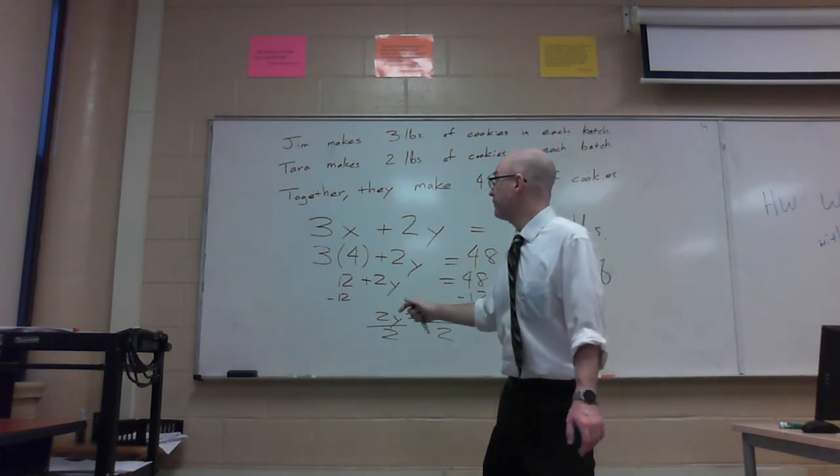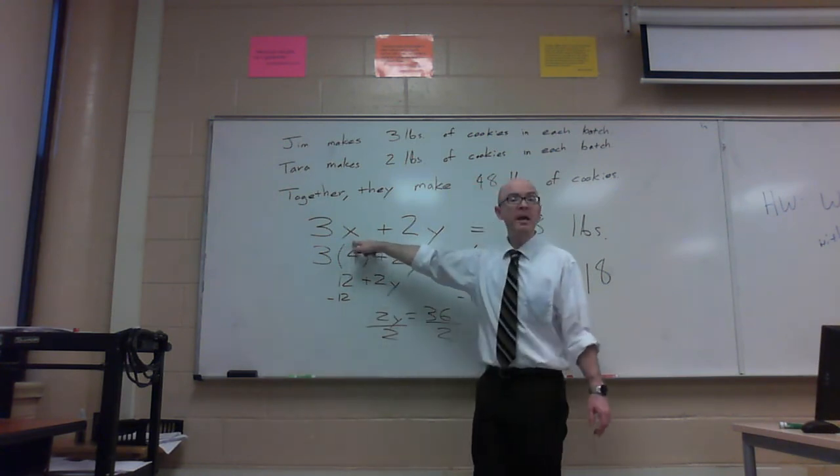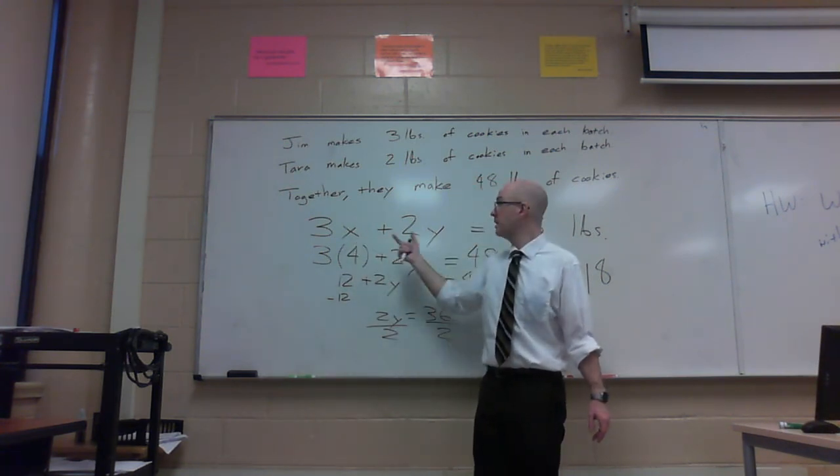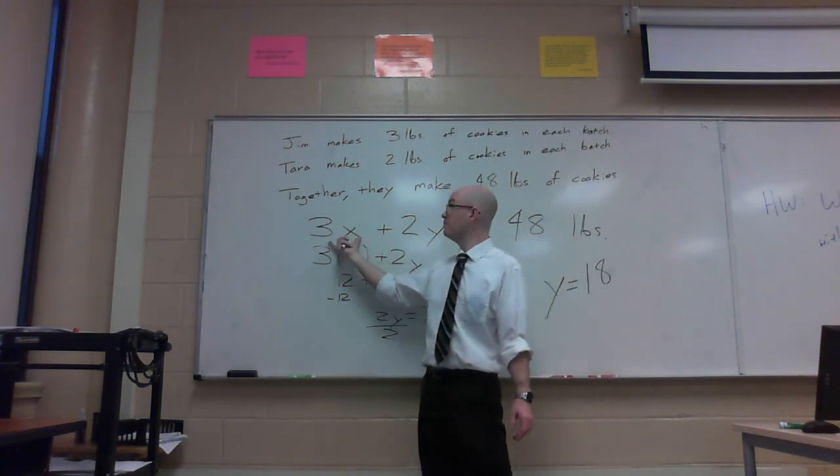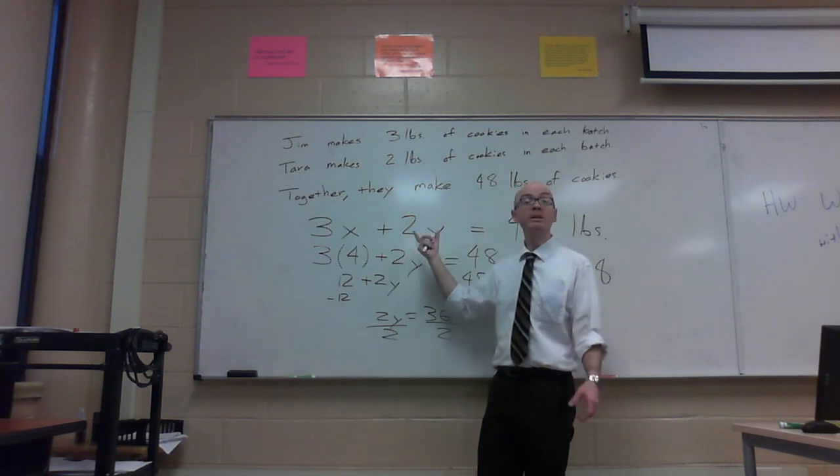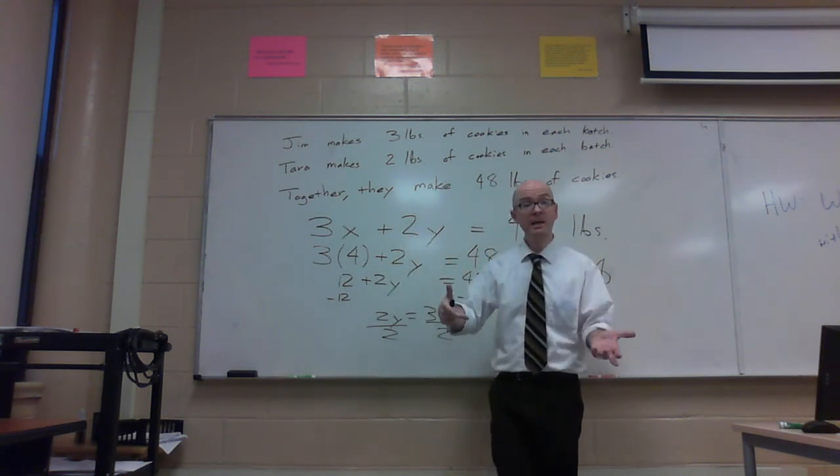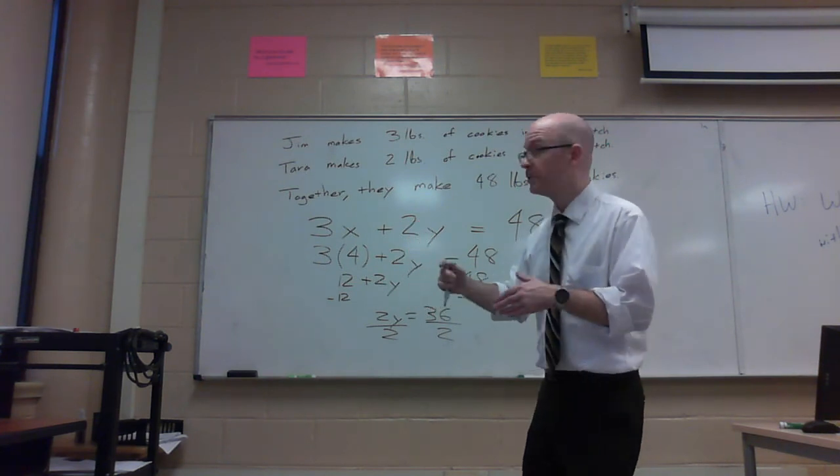You have an infinite number of solutions here, because if Jim makes more cookies, then Tara does not need to make as many. And if Jim makes fewer cookies, fewer batches, then Tara will need to make more batches in order to make up for the cookies that Jim is no longer making. So it's a relationship.